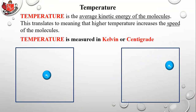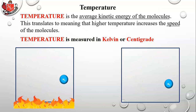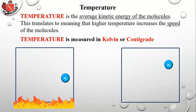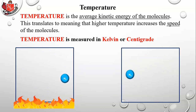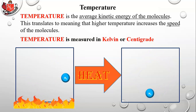Temperature is the average kinetic energy of molecules — higher temperature means molecules move faster. Temperature is measured in either kelvin or centigrade. One degree of temperature change on the kelvin scale is exactly the same as one degree on the centigrade scale; the only difference is what each calls zero. Now imagine taking the hot area and transferring some of that heat over to a cooler area where molecules are moving slower.